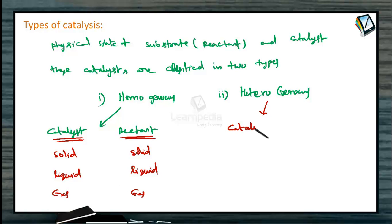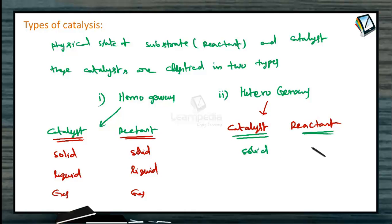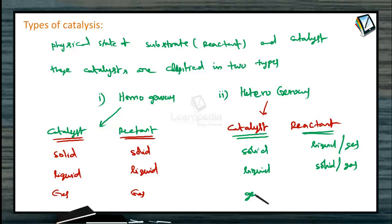In heterogeneous catalysis, the catalyst and reactant are present in different states. If the catalyst is in the solid state, the reactant may be in either liquid or gas. If the catalyst is in the liquid state, the reactant may be in solid or gas. These types of reactions are called heterogeneous reactions or heterogeneous catalysis.